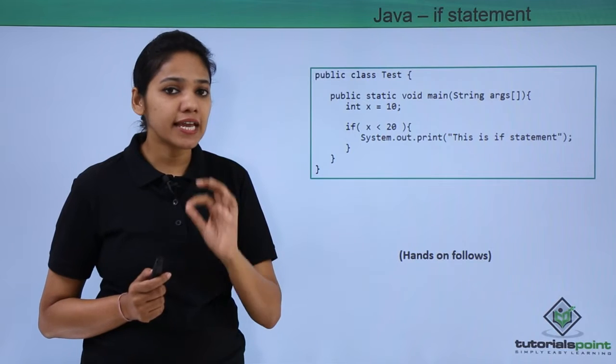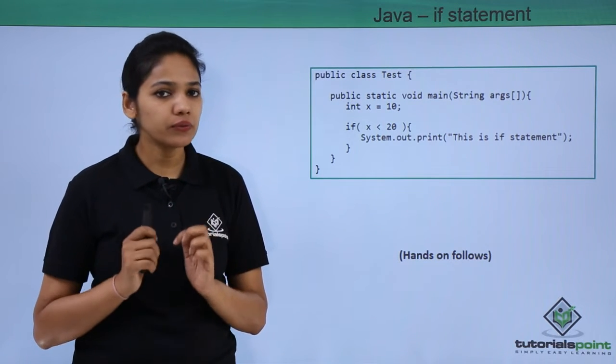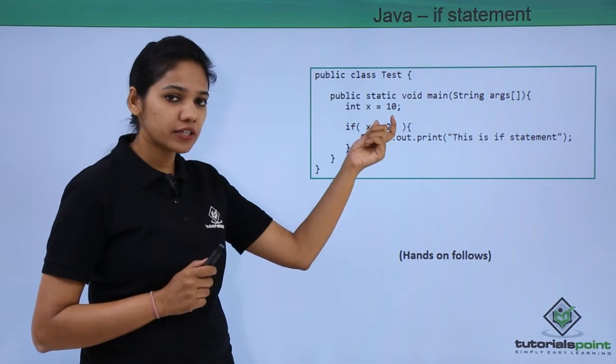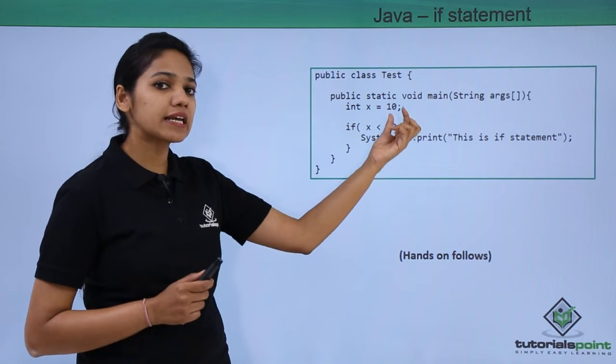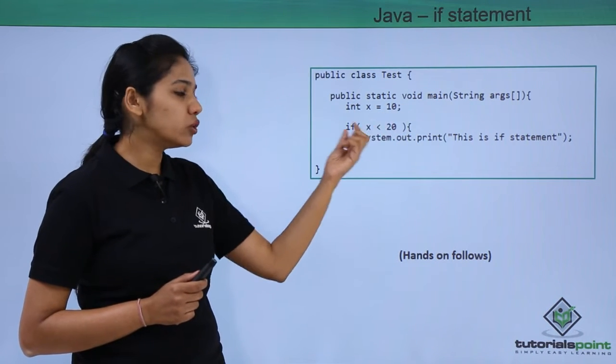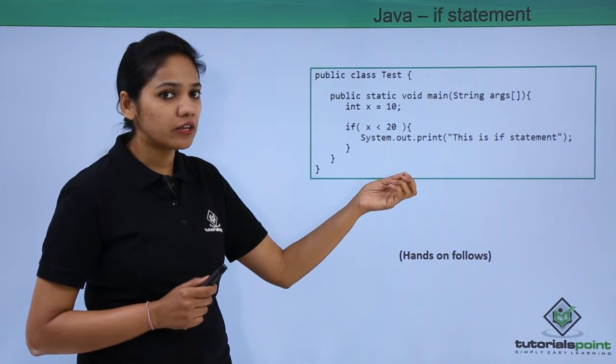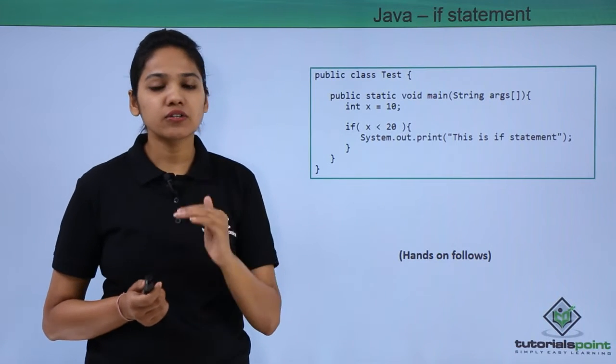But where is this x? We need to first declare a variable to which we are trying to compare. So we have declared a variable which is an integer type. First you declare a variable outside the if condition, and once you have declared and initialized, then you use this variable to compare with any other value. If that value returns true, then it executes the rest of the statements.